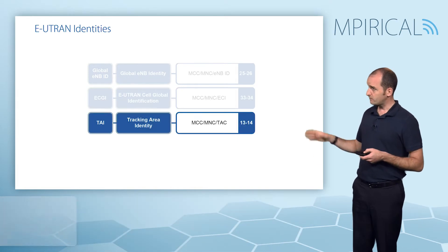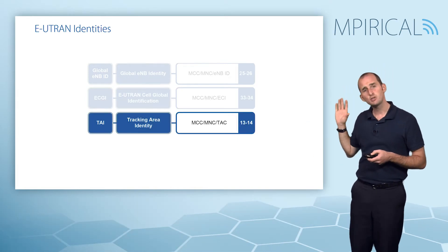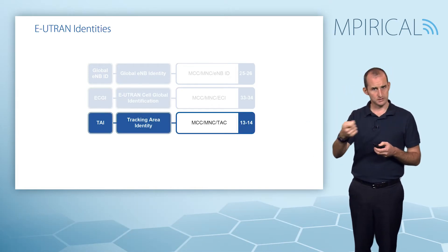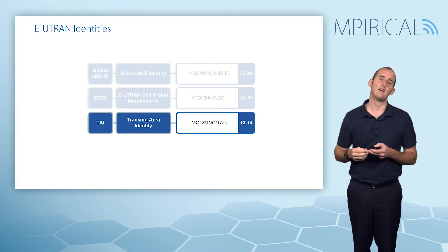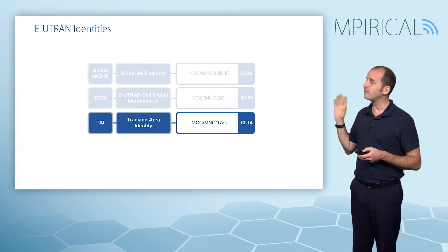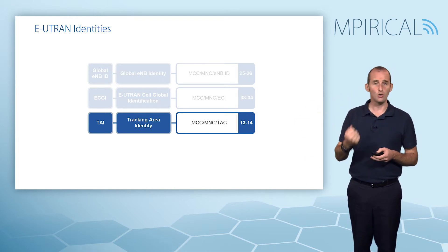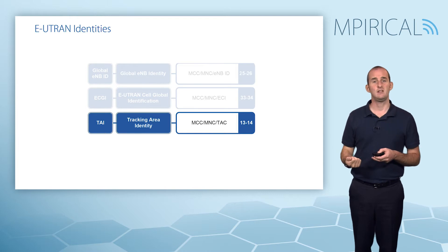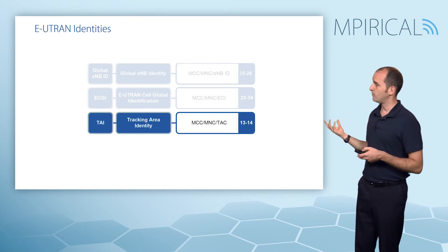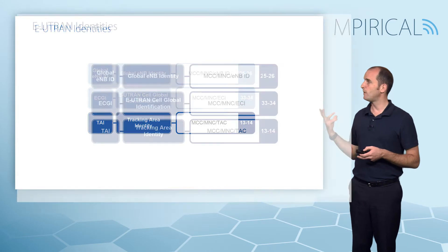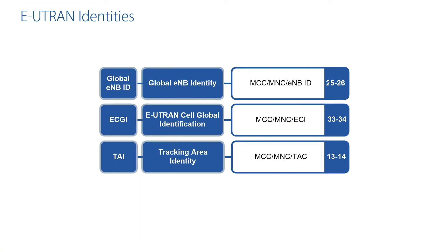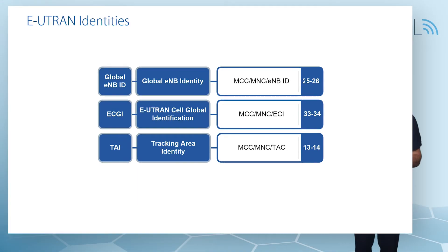Likewise, all of our tracking areas — where multiple cells form a tracking area — also have a unique ID in our RAN. The tracking area identity is composed of a mobile country code, mobile network code, and tracking area code. It is the tracking area ID that is used in the formulation of a tracking area list.